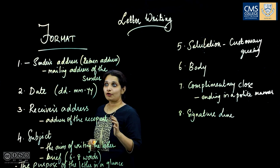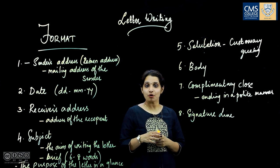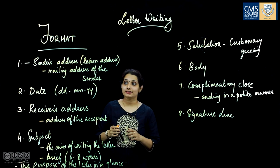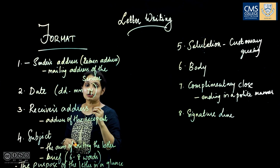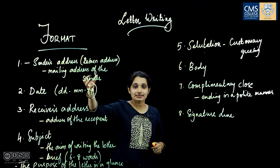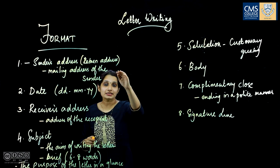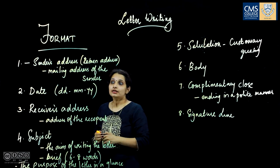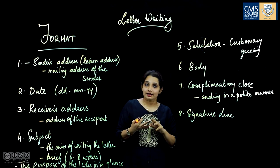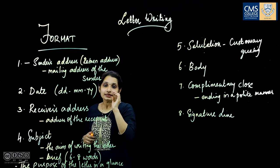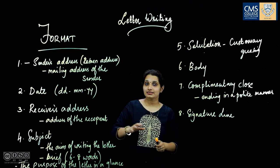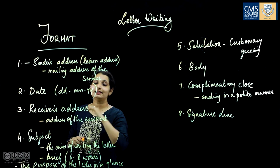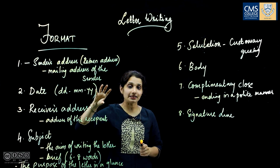A formal letter has eight essential components. The first component is the sender's address, also known as the return address. This is the mailing address of the person sending the letter. It is called the return address because this is the address to which a reply will come. Here we give our name, designation, and address. The only case where we can omit the sender's address is if we are writing on a letterhead that already contains these details.